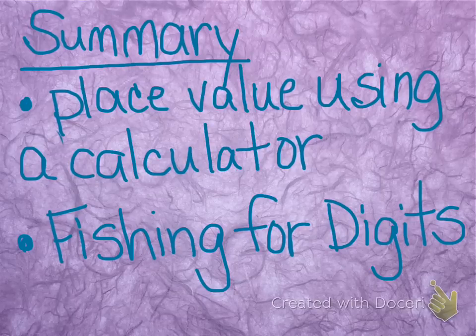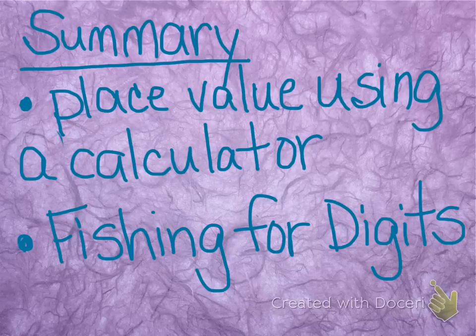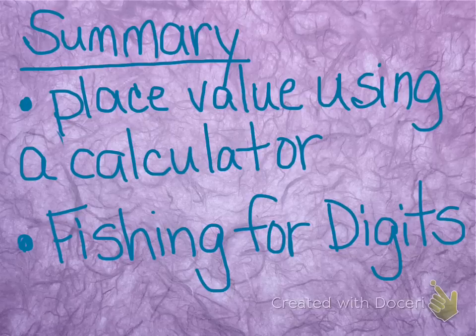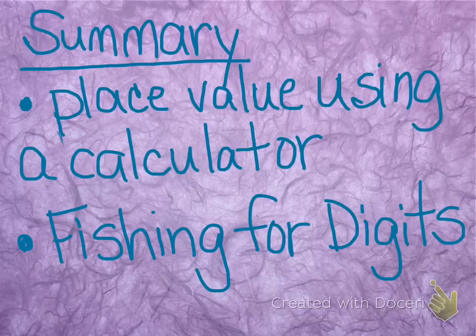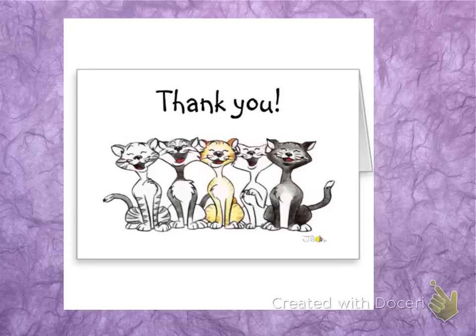All right, to summarize what we've talked about today, we've looked at using place value in calculators, and we learned how to play the game fishing for digits. Now my advice when you go to play that game is to have your SRB next to you, because the directions are a little confusing, and I understand that. So it's not going to hurt to have the directions right there so you can look back at them. Write down any questions that you have, and I will be more than happy to help you in class. Thank you.